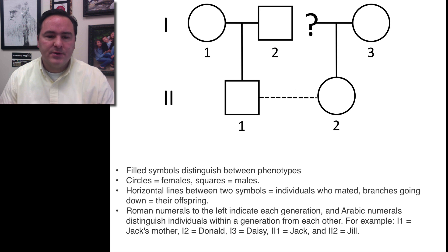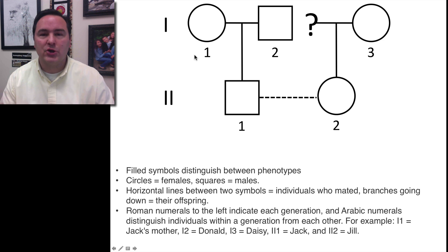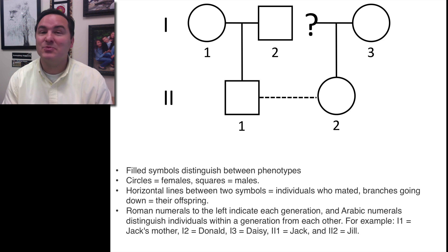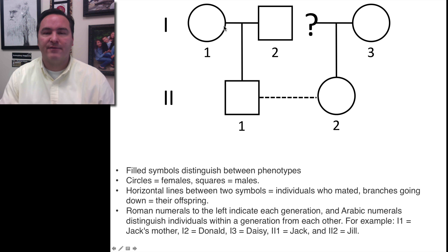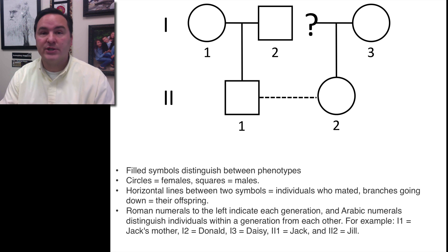To do this with humans, we can't cross humans like we can with lots of other organisms. So we use pedigrees instead, where we can look at the genealogical and familial relationships, and look at characteristics to try to figure out how these characteristics are being passed on through generations, and thus figure out the genotypes of the individuals.